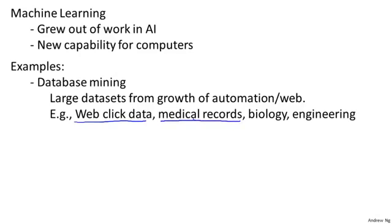Medical records: with the advent of automation, we now have electronic medical records, so if we can turn medical records into medical knowledge, then we can start to understand disease better. Computational biology: with automation, biologists are collecting lots of data about gene sequences, DNA sequences, and machine learning algorithms are giving us a much better understanding of the human genome and what it means to be human. And in engineering as well, in all fields of engineering, we have larger and larger data sets that we're trying to understand using learning algorithms.